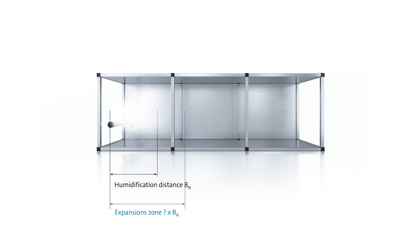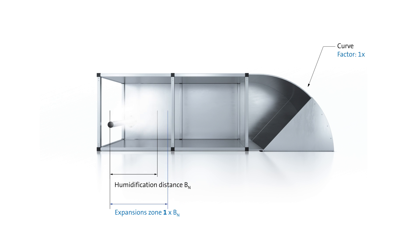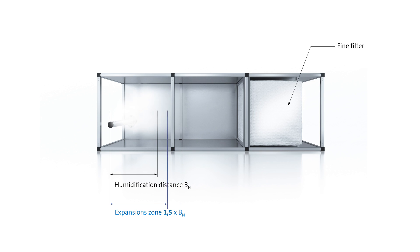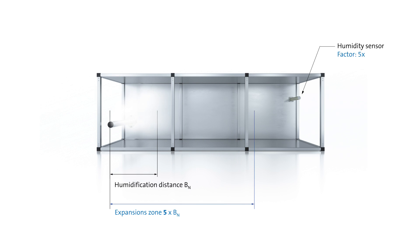the expansion zone is determined based on this humidification distance BN with due consideration of the kind of obstruction used at the end of the humidification distance. If there is an elbow, the simple distance BN is used. If there is a fine mesh filter, one and a half times the BN is used. If a humidity sensor is installed, provision should be made for five times the BN.